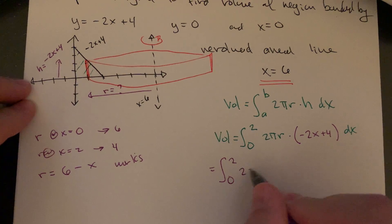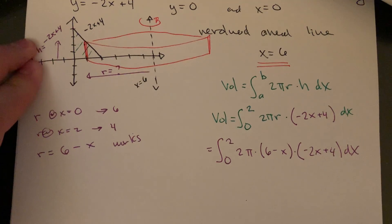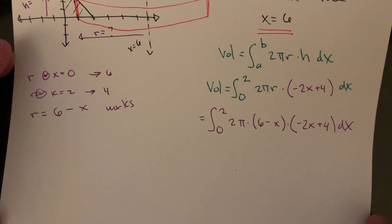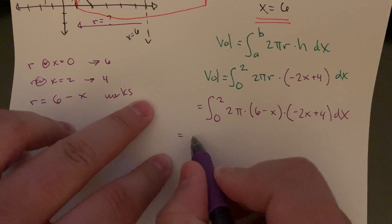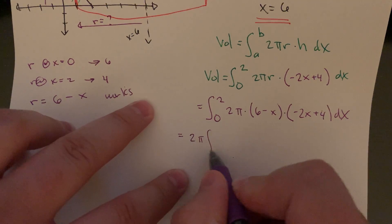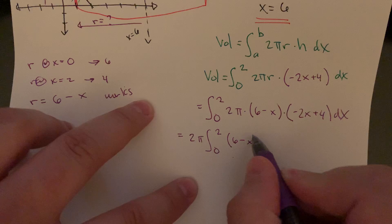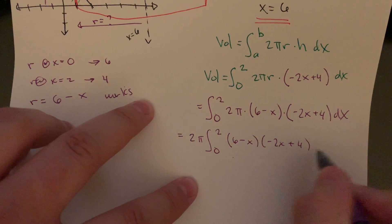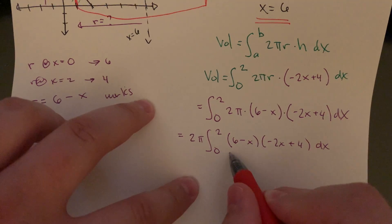Let's substitute everything in. The integral from 0 to 2 of 2 pi times the radius (6 minus x) times the height (negative 2x plus 4) dx. Is this still integrable? Of course — you just need to clean it up. 2 pi comes out front, and then we FOIL or box-multiply to expand the product.